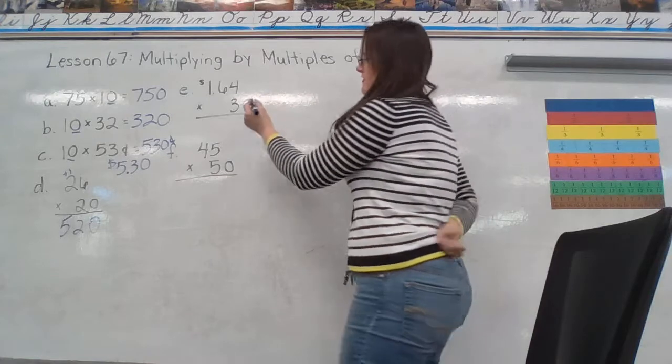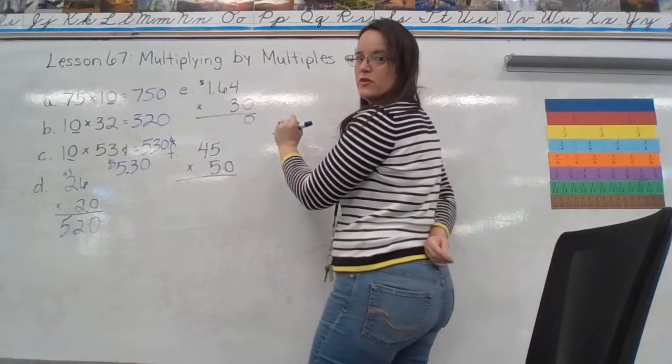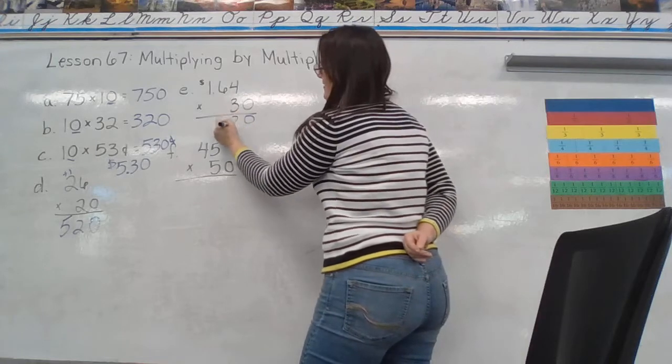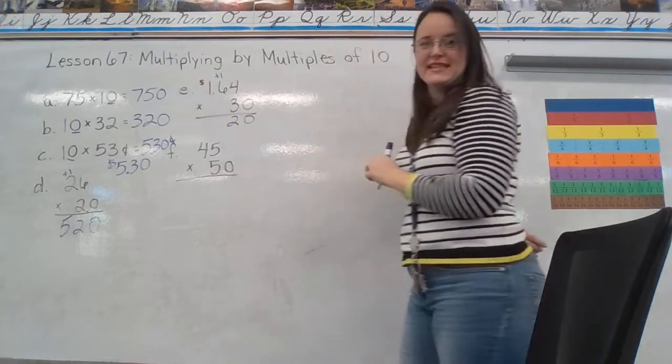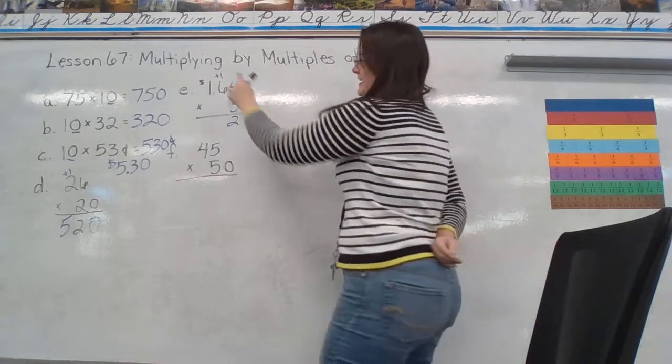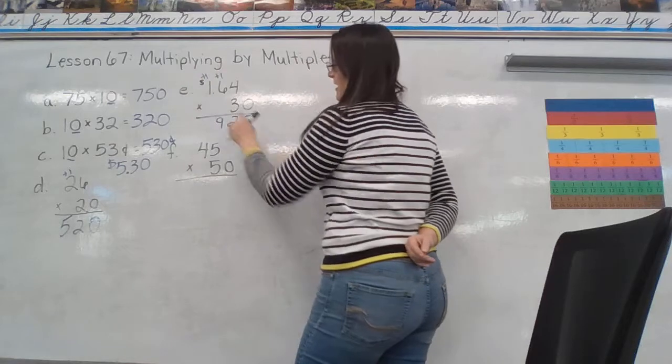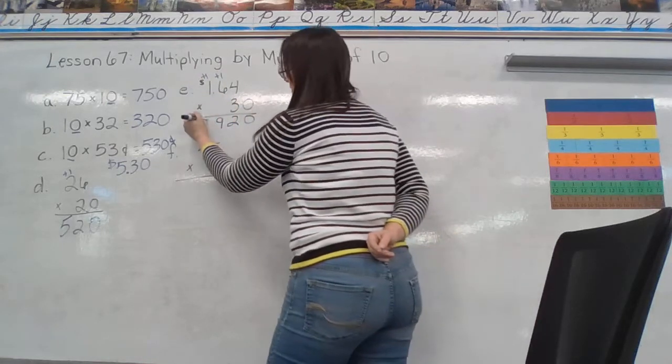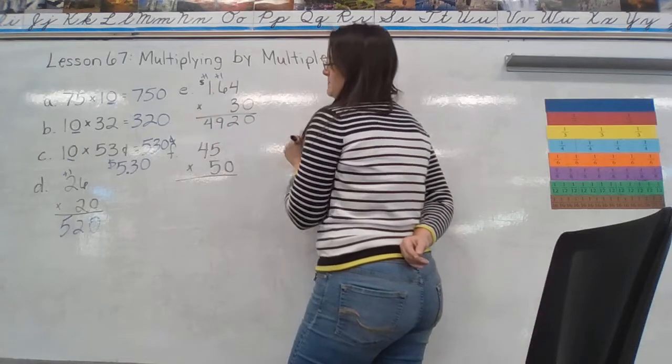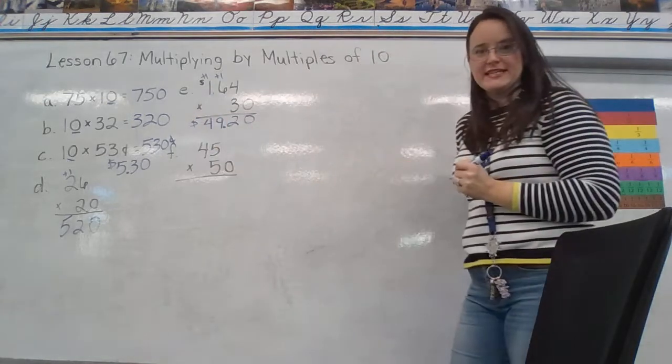E, again, they wrote it vertically and I can just drop my 0. 3 times 4 is 12. Carry my 1. 3 times 6 is 18. 18 plus 1 is 19. Carry another 1. 3 times 1 is 3. Plus 1 is 4. And this is money. So, I have to make sure to fill in my dollar and my decimal sign there.